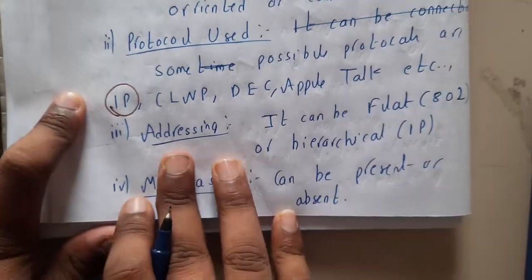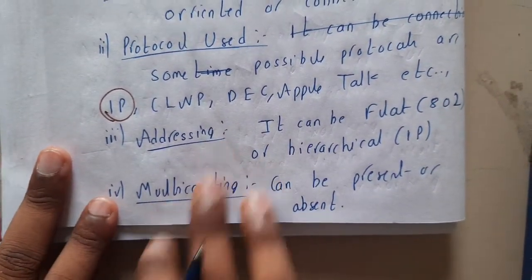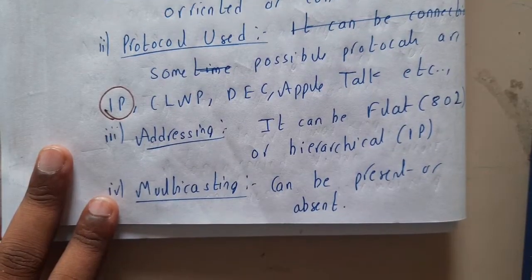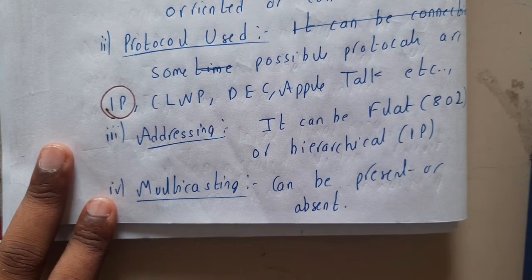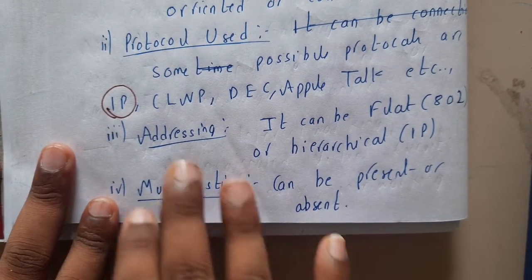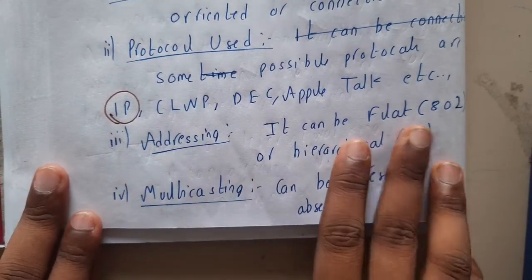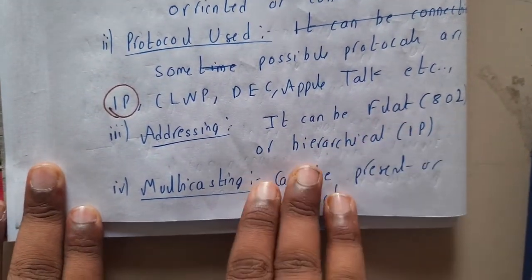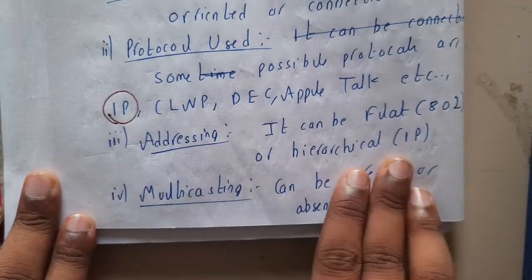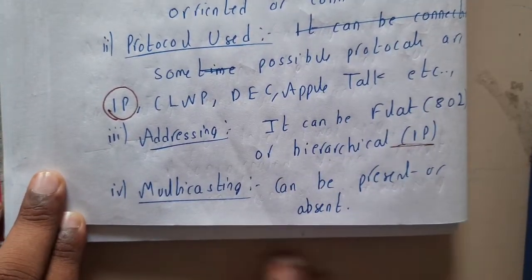There are also multiple addressing types. Two popular ones are flat — 802 — and hierarchical, which is nothing but IP. So popularly we will be using IP addressing.